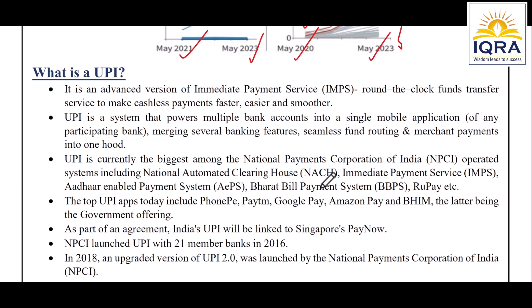Now let's understand what UPI actually is. UPI is an advanced version of the Immediate Payment Service. When you scan someone's QR code or phone number, you can immediately make a payment — that's why it's called an advanced version of the Immediate Payment Service.